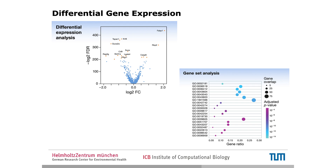In this plot, the color also tells us how significant the overlap with the gene set is. Blue color means higher significance, and purple color means lower significance.